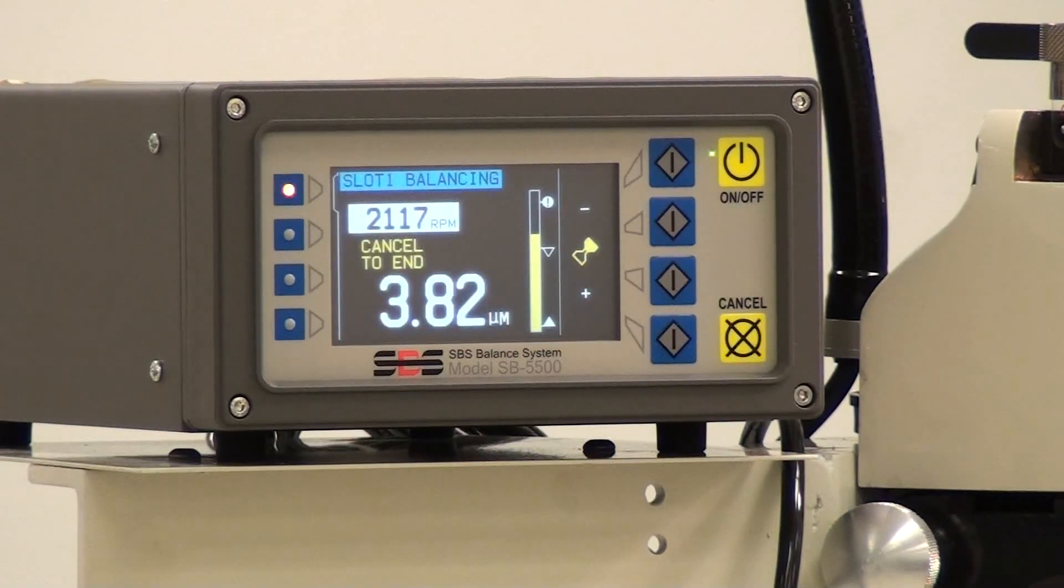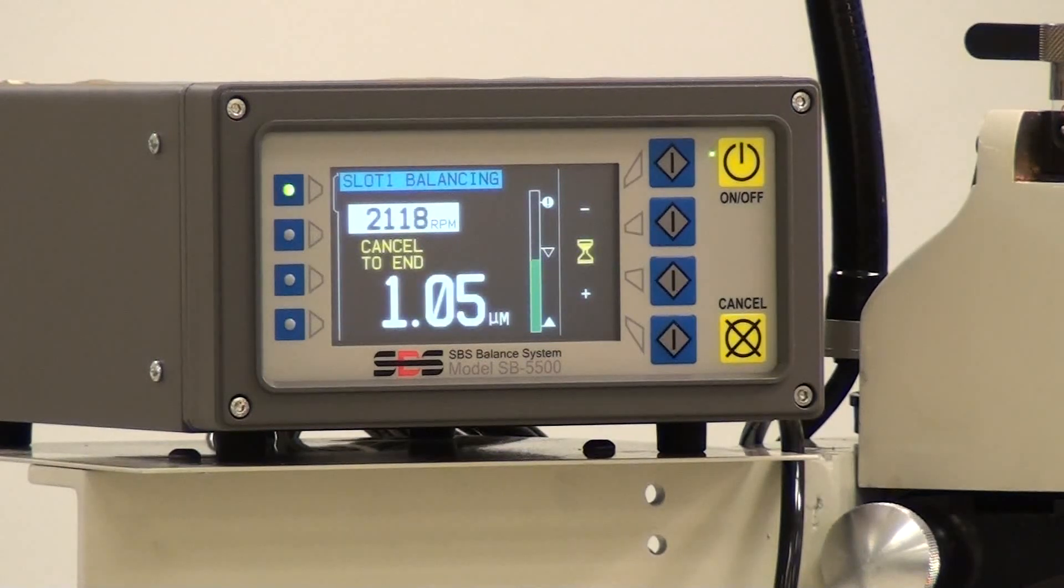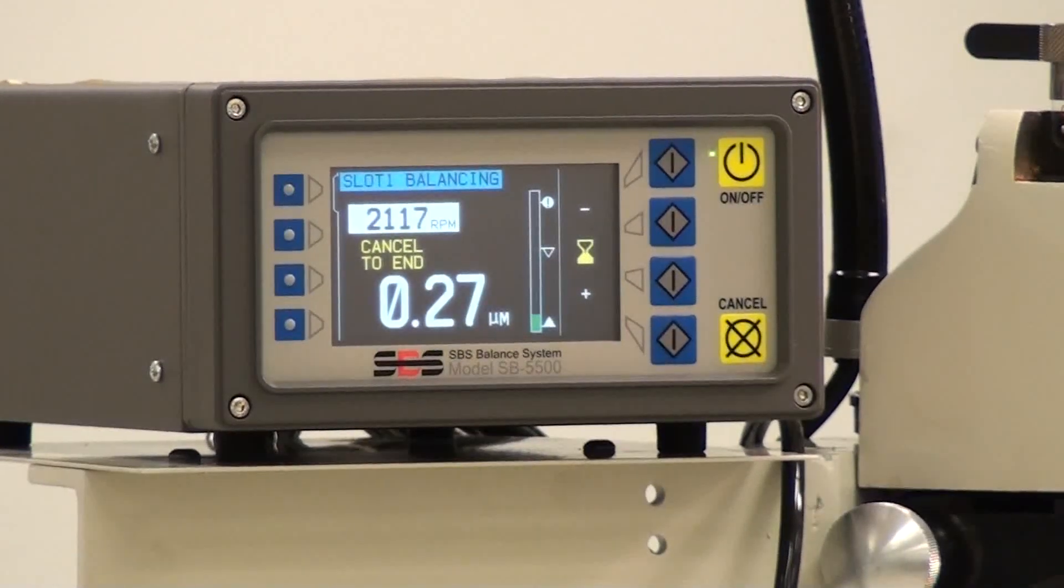The SBS system can be installed in minutes. The system comes complete as a turnkey system with a custom engineered spindle adapter specific to a particular grinding machine model with any special tools and fasteners necessary for installation.